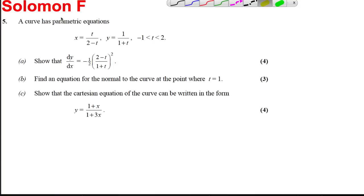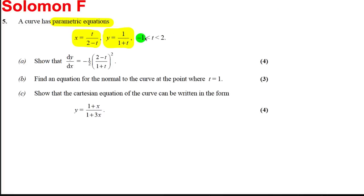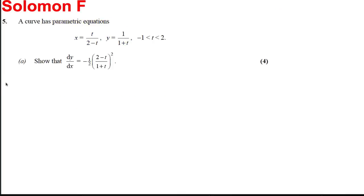Here we've got a question on parametric equations. We're given that x is t divided by 2 subtract t, and y is equal to 1 divided by 1 plus t. We're also told t must be a value between negative 1 and 2. We're asked to show dy by dx is the following, so it's a nice question in that we know what the answer is. Let's have a go at part A.